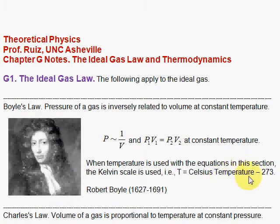If we subtract 273 from the Celsius temperature, you get the Kelvin scale. In the Kelvin scale, we don't say degrees Kelvin — we say Kelvins, although many people do put the degrees in, but technically in the metric system, you shouldn't do that.